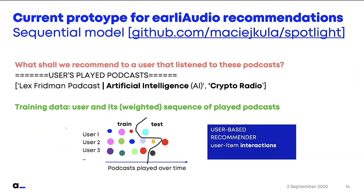The training set is actually created by hiding items from the user's history, and the test set is what is hidden. The model aims to learn to rank items in a way that, for instance for user one, a podcast that should be hidden gets a lower rank in the ranking the model produces. This is a user-based recommender system because it only uses the interactions — we don't need any kind of information about the podcast features themselves.